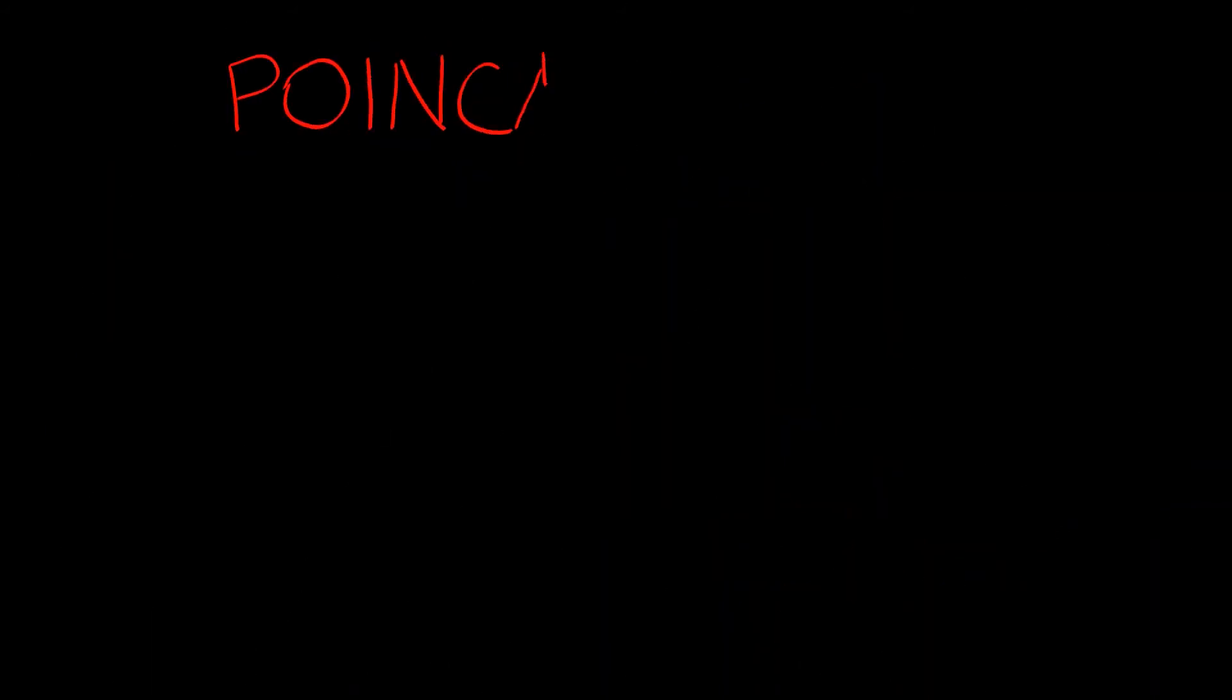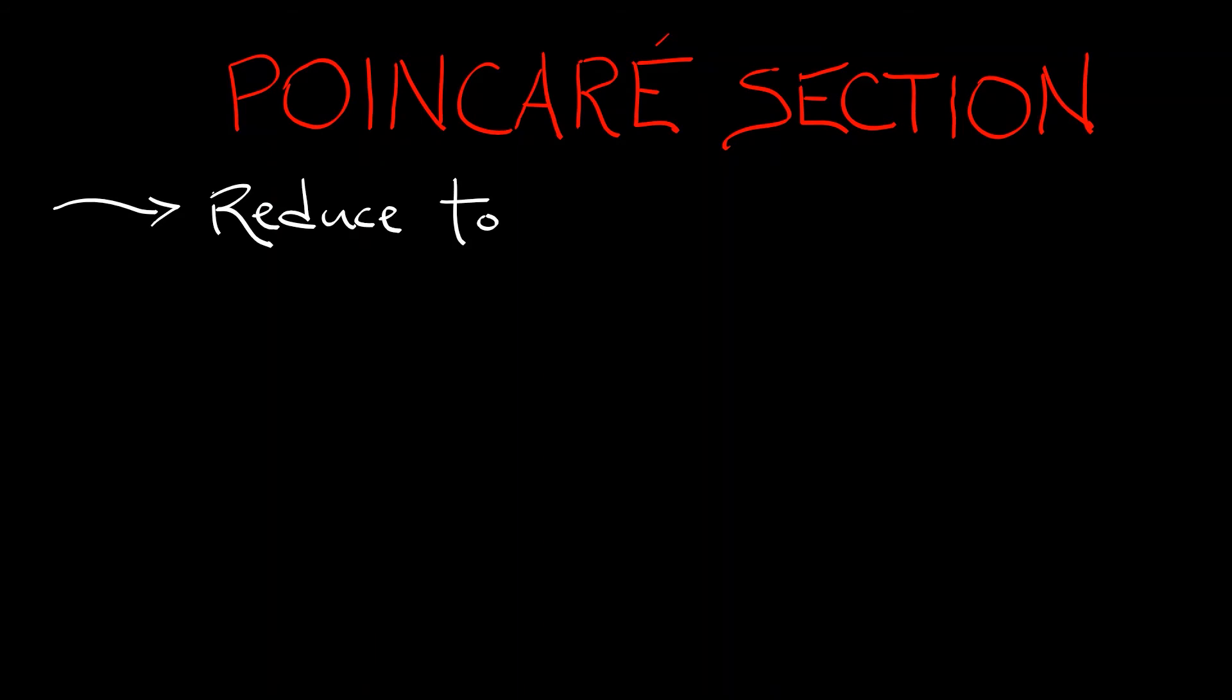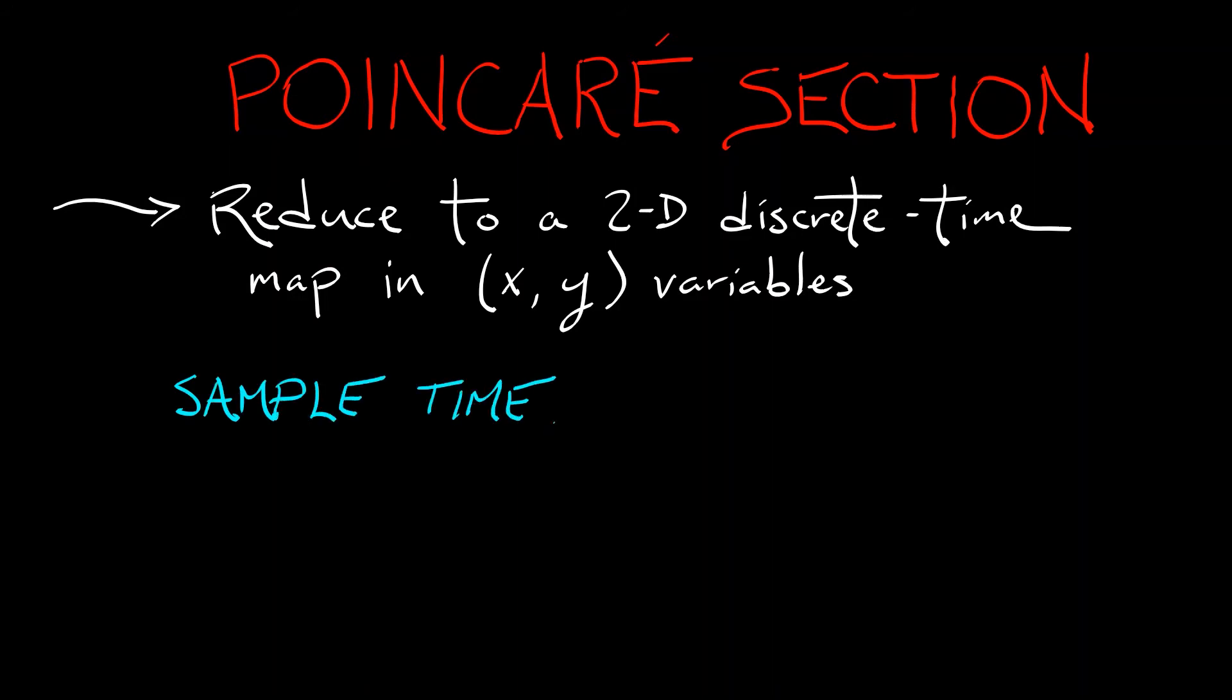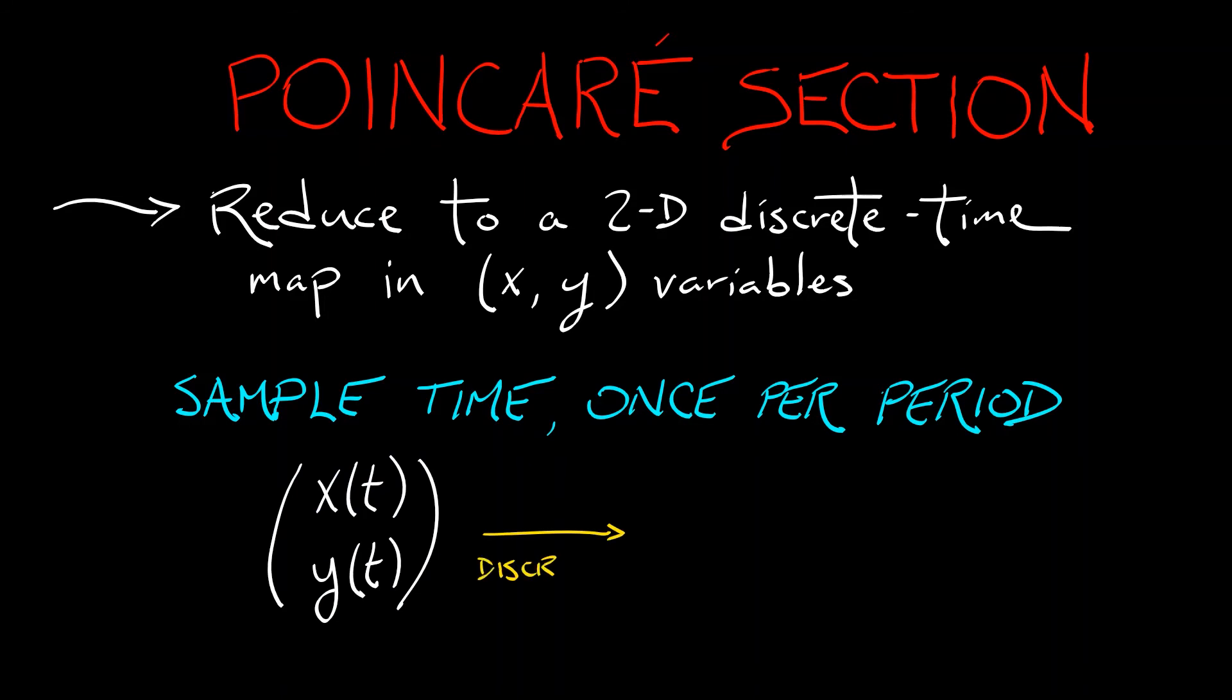And we can use that time periodicity to define a Poincaré section. This is a reduction to a two-dimensional discrete time map in the x and y variables. And this is very simple. We just sample the time once per period. So, instead of solving for x of t and y of t in this continuous time system, we do so but then discretize to xn and yn, where the continuous time variable is related to the discrete time variable n via t equals 2 pi n over omega. And the result of this is a two-dimensional map.